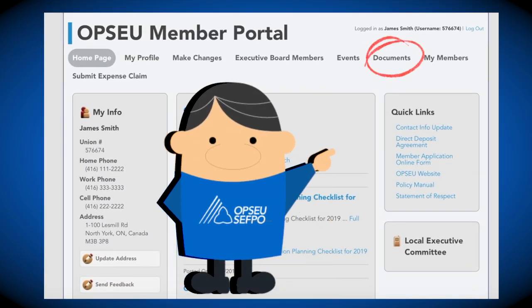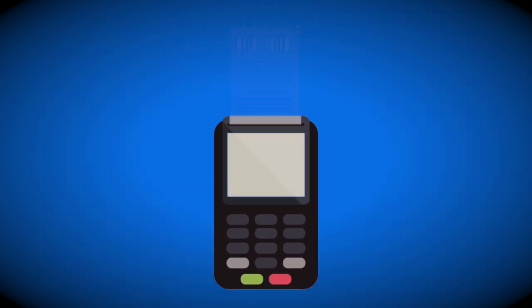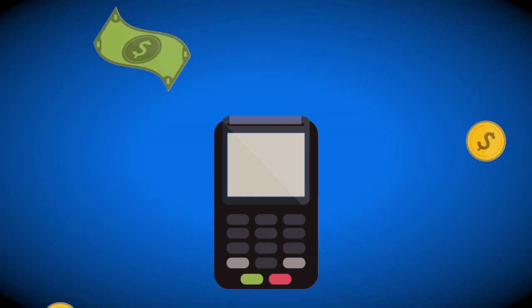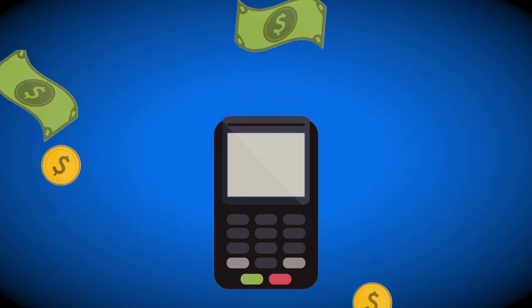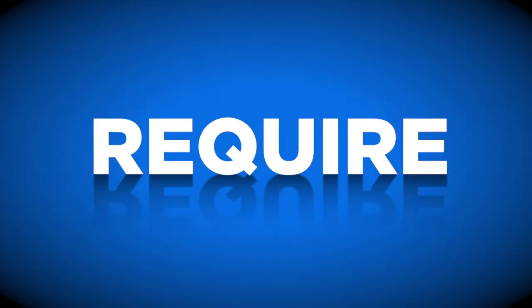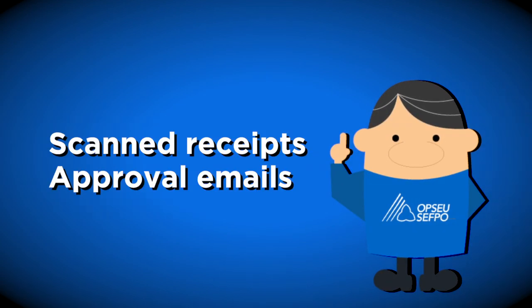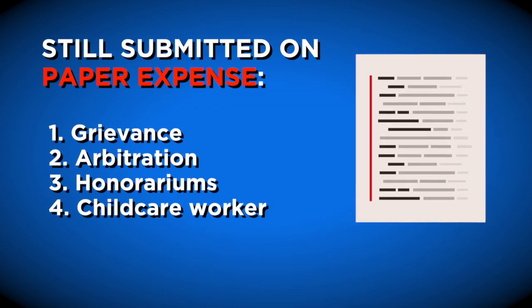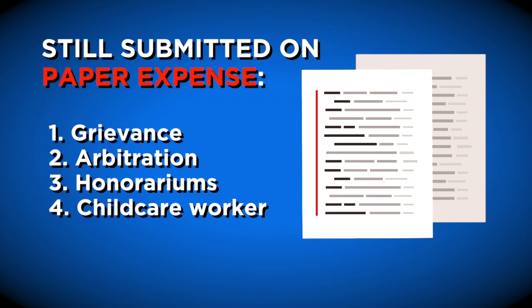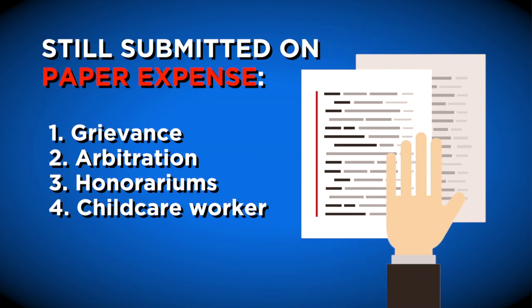please check the Documents tab before you start the submission process. Please ensure that all receipts have been scanned and are clearly legible before attaching them to your e-claim. All expenses require documentation except mileage when free parking is available. Your documentation may include scanned receipts, approval emails, etc.